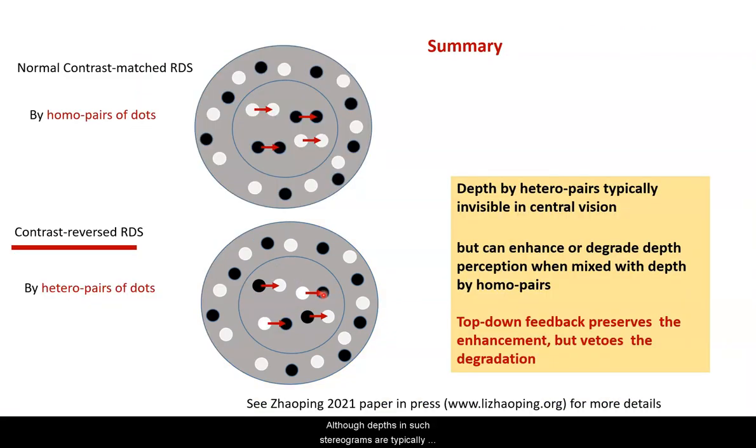Although depths in such stereograms are typically invisible in central vision, they can enhance or degrade depths in these normal stereograms when these hetero pairs are mixed with homo pairs. And when you have top-down feedback, the enhancement is preserved, but the degradation is vetoed.